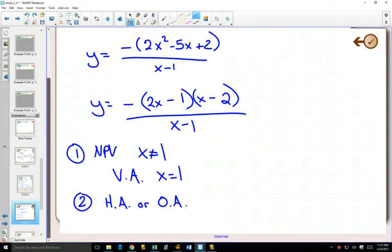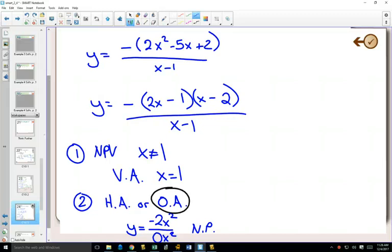If you like the shortcut of always starting with, what's my highest degree? My highest degree is an x squared. So if I go in my numerator, I have minus 2x squareds. In my denominator, I have no x squareds. Well, this is not possible. That also is telling you that you're going to have an oblique asymptote.